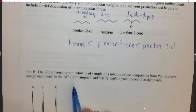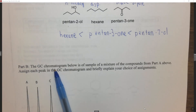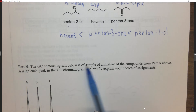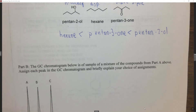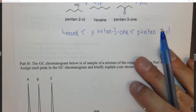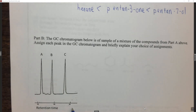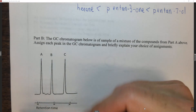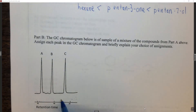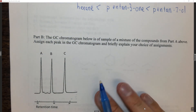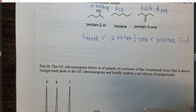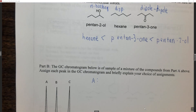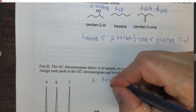Part B: the GC chromatogram below is a sample of a mixture of compounds from part A. Assign each peak in the GC chromatogram and briefly explain your choices. In a GC we have time on one axis and some kind of signal — in our particular GC it's picoamps — on the other axis. Compounds in GC elute in order of boiling point. So if hexane has the lowest boiling point, it's the first compound to come out, in this case around 22 minutes.